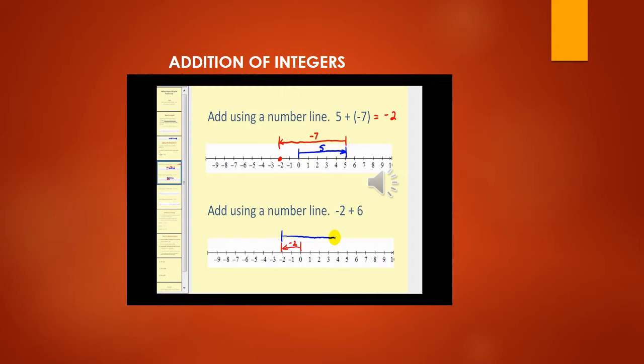In the case of counting numbers, we noted that addition means moving to the right on the number line. The same holds good in the case of positive integers. Some rules should be kept in mind while moving on the number line: adding a positive integer means moving to the right, and adding a negative integer means moving to the left on the number line.